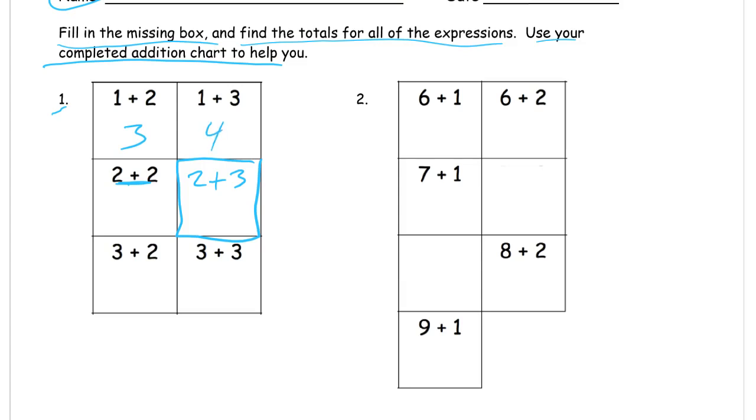That's 4. 2 plus 2 is a double. 4, 2 plus 3 is a double plus 1, so it's 1 more than a double total. And 3 plus 2, you've got 3 plus 3. That's a 6. That's a double. And if that's, this is a double minus 1. You can think of it that way.